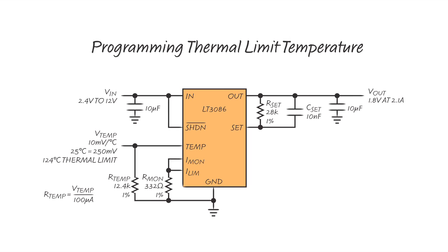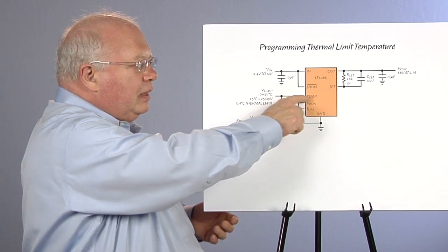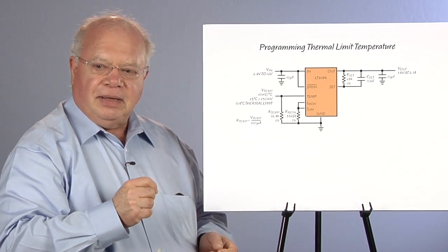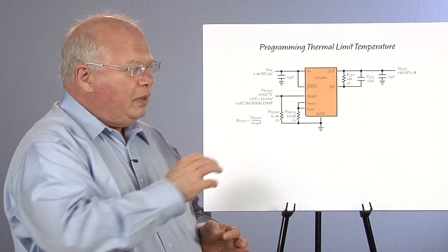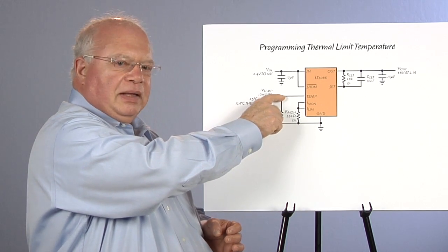We can control the thermal limit as well. The thermal limit works slightly differently in that we remove the drive from the output transistor when the thermal monitor pin has 100 microamps of load on it. Internally, we have a voltage output at 10 millivolts per degree at this point.